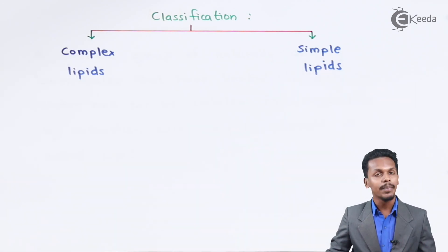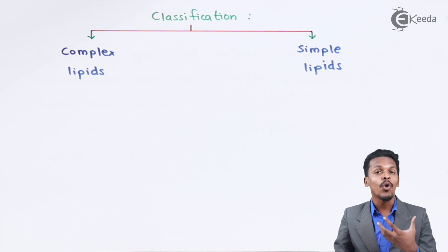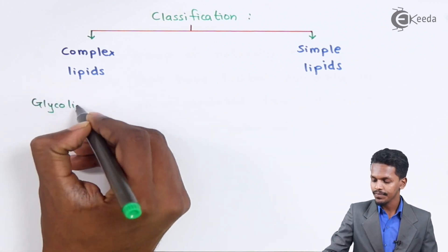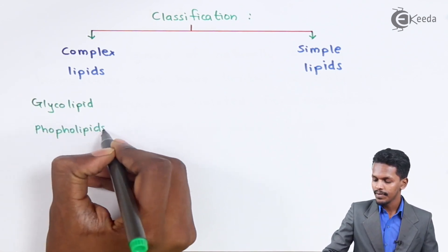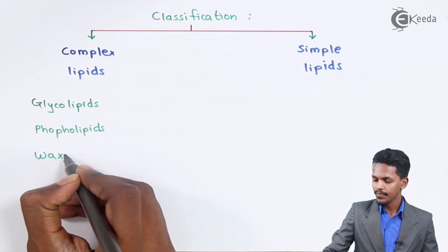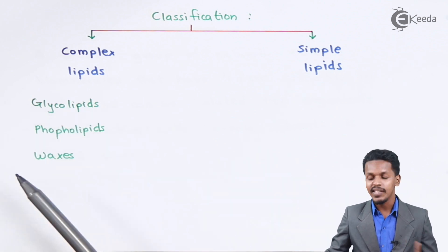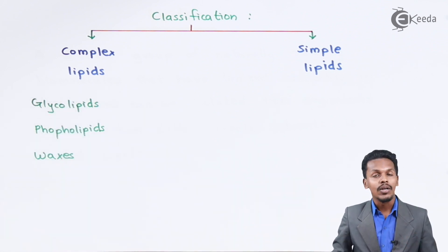Complex lipids are esters of long-chain fatty acids. Examples of complex lipids include glycolipids, phospholipids, and waxes. These three are the main types of complex lipids.